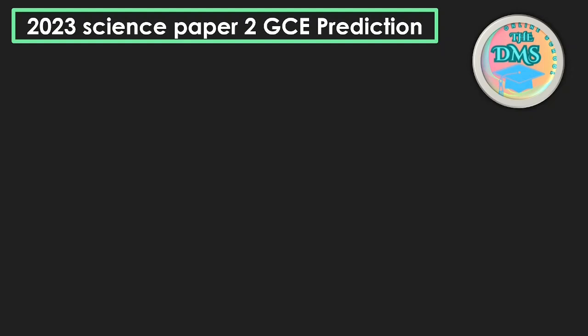In today's video I'm going to give you the 2023 Science Paper 2 GCE prediction. What I've done is analyze past papers from 2015 to 2022, looked at how topics have been coming in the examination, and identified key topics that have always appeared, as well as topics that have not been coming and are likely to appear this year. Treat this as a study guide and not as a leakage.